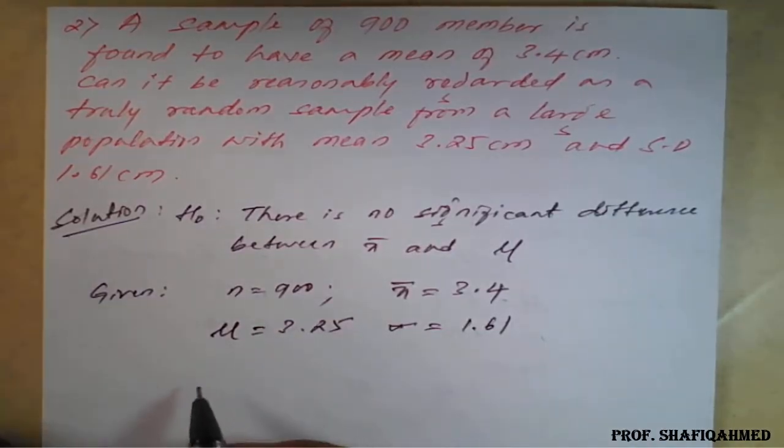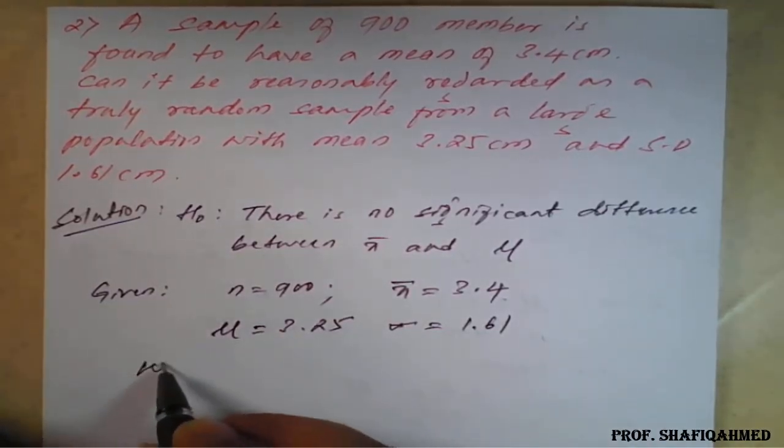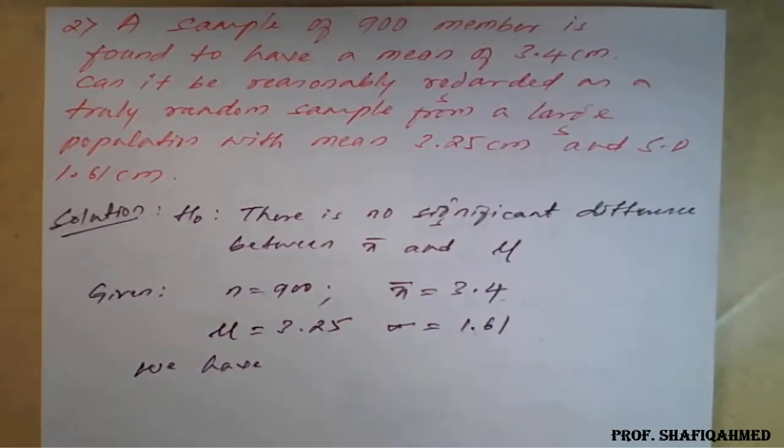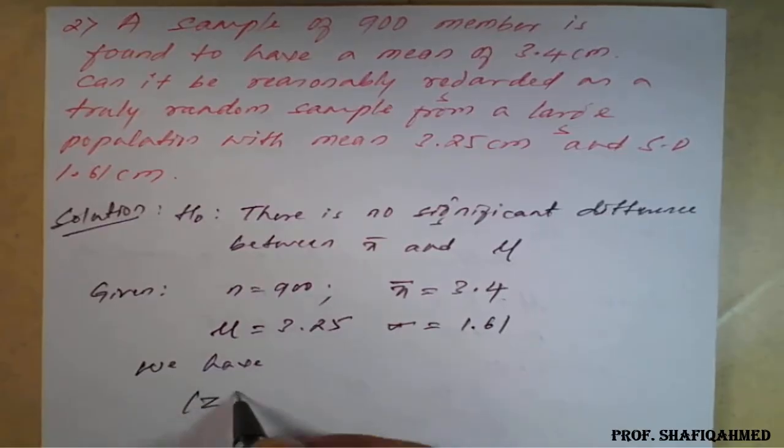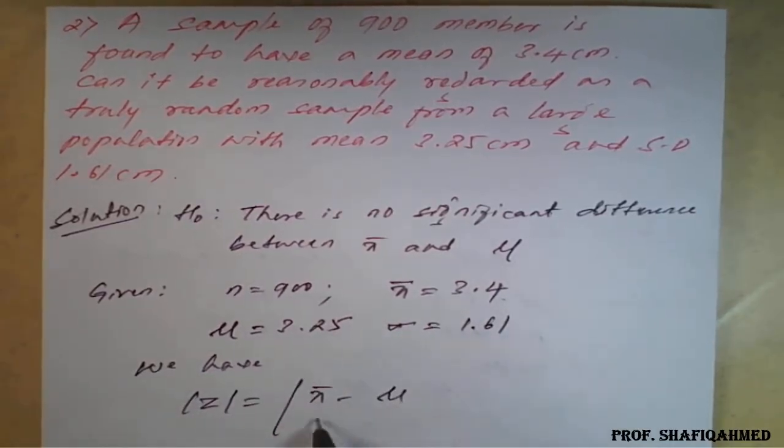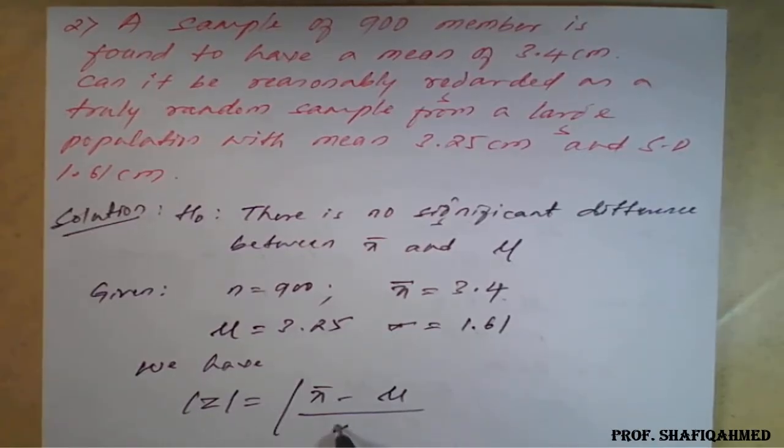We know the formula. We have |Z| = |X̄ - μ| divided by σ divided by √n.